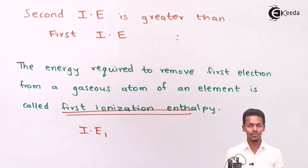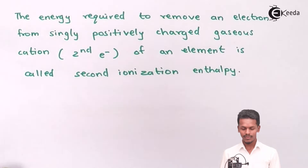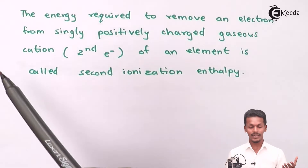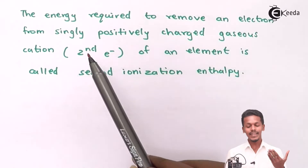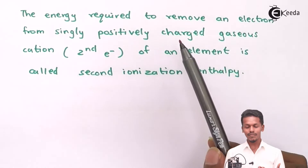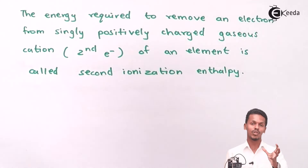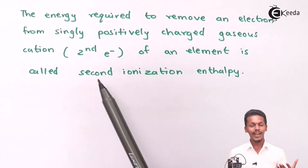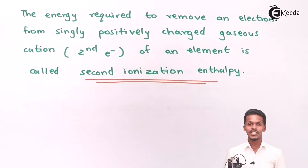We can represent it as ionization enthalpy 1 (IE₁). For the second ionization enthalpy, it is the energy required to remove an electron from a singly positively charged gaseous cation — that is, if we remove the second electron of an element, that process is called the second ionization enthalpy. Simple.